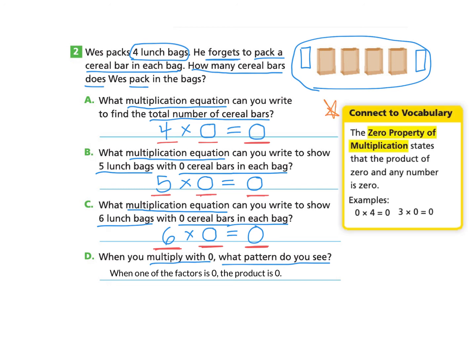You'll notice that the connect to vocabulary has some information here about the 0 property of multiplication, which states that the product of 0 and any number is 0. And they give an example of 0 times 4, which is 0, which we have up here, and 3 times 0, which is 0.